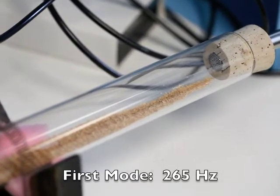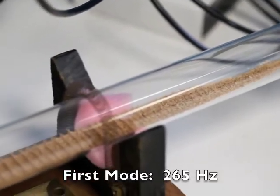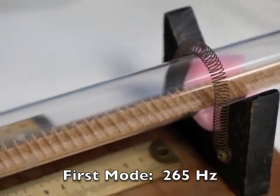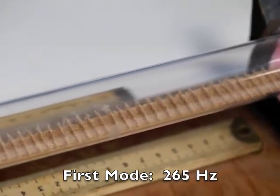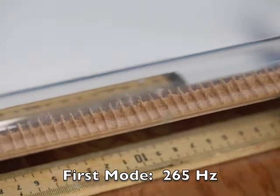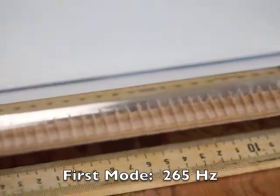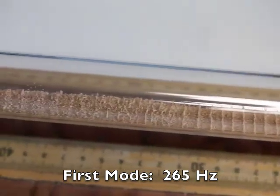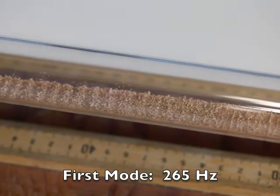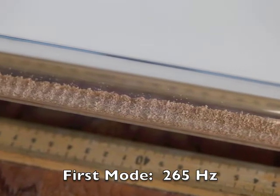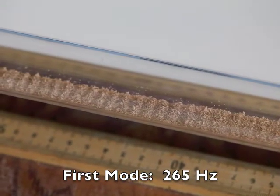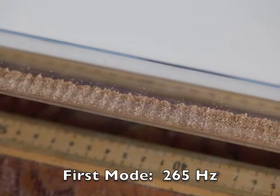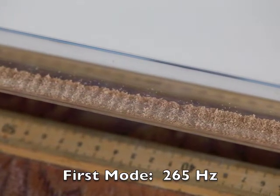If we move back, you see the cork dust agitation. If we keep going, you see that there is no cork dust agitation here in the center of the tube. So that's a velocity node or pressure anti-node.